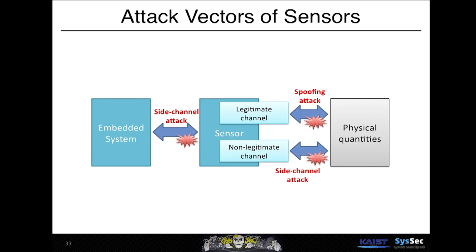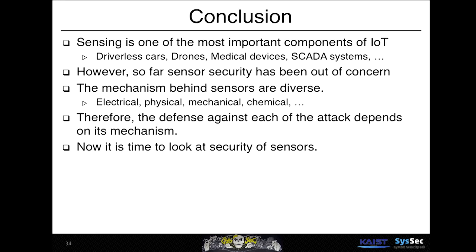Today, I presented three attack vectors of sensor spoofing: spoofing attack on the legitimate channel, side-channel attack on a non-legitimate channel, and side-channel attack on the wire between the sensor and the embedded system. Sensing is one of the most important components of IoT systems such as driverless cars, drones, medical devices, and SCADA systems. However, sensor security has been largely out of concern — I showed today that it should not be.